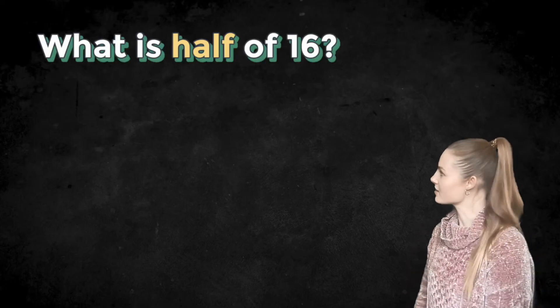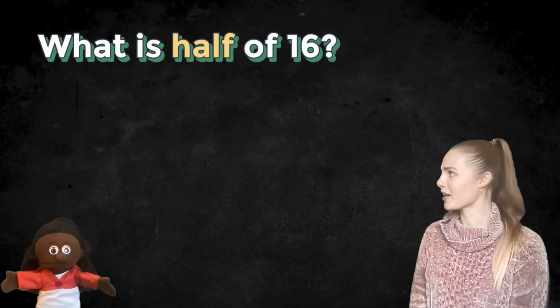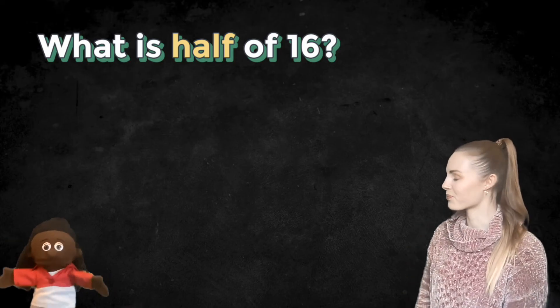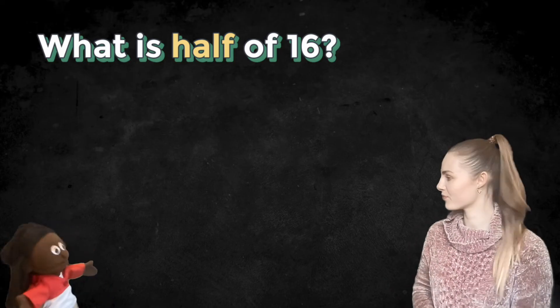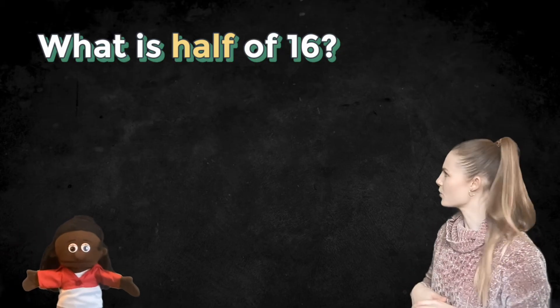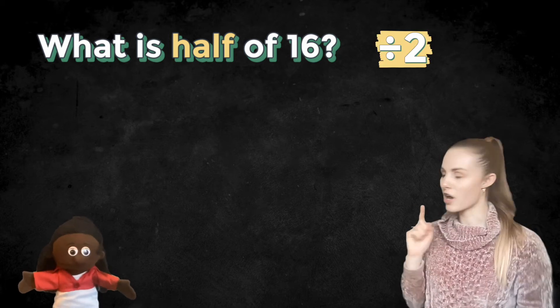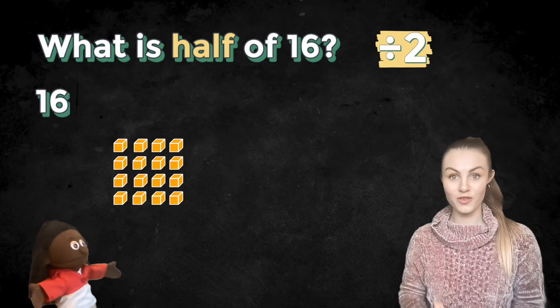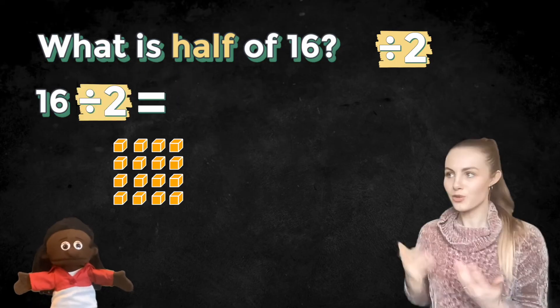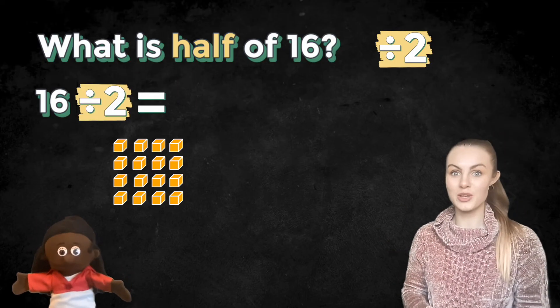This time we're going to start with just the problem and work out the whole thing. So this says, what is half of 16? Roo, I might need your help on this one. Where should we begin? Roo says we should write out the number sentence. Okay. So if we're halving, that's the same as dividing by two. So we're starting with 16. We're dividing by two. How do I do that, Roo? You're right. We share between two equal groups.